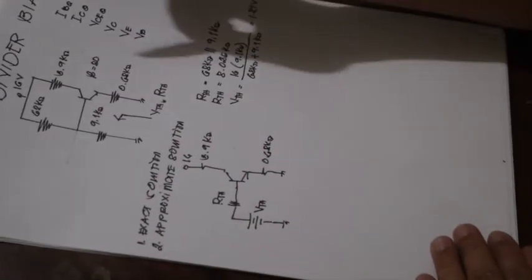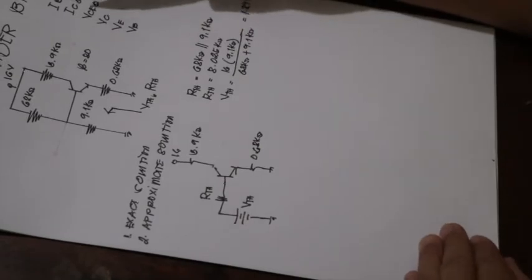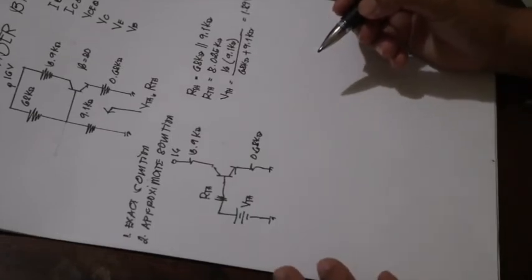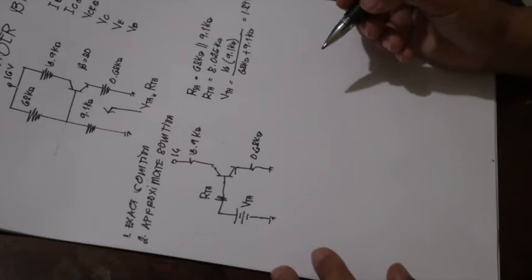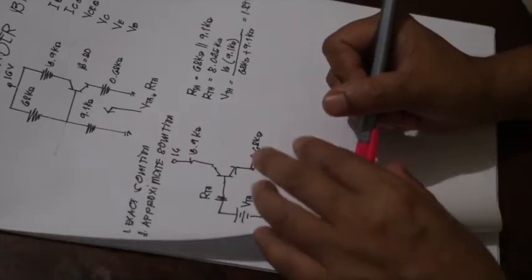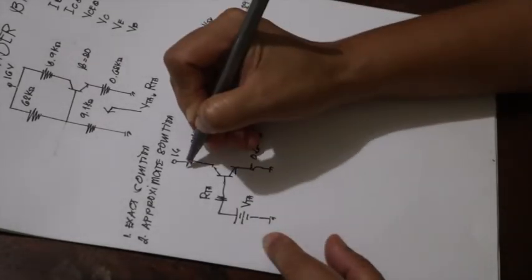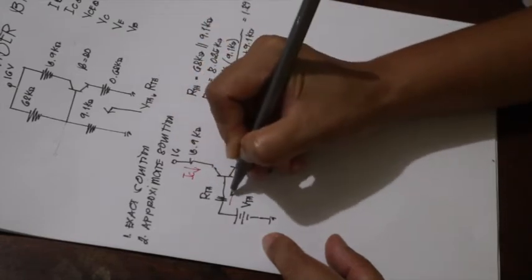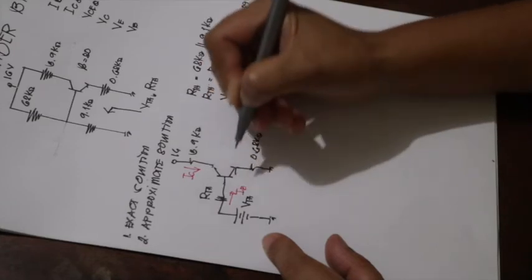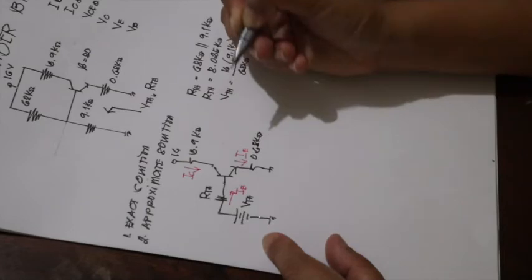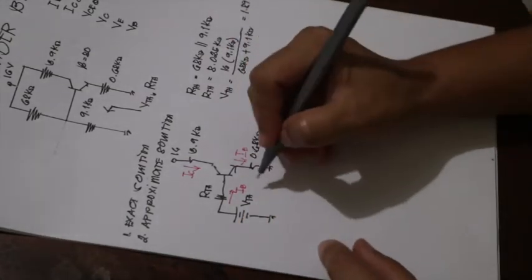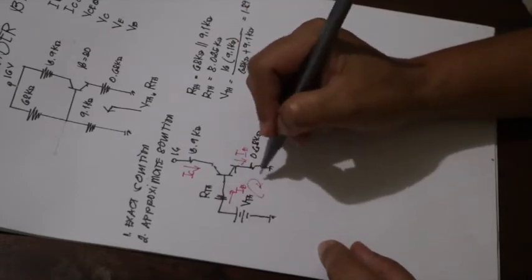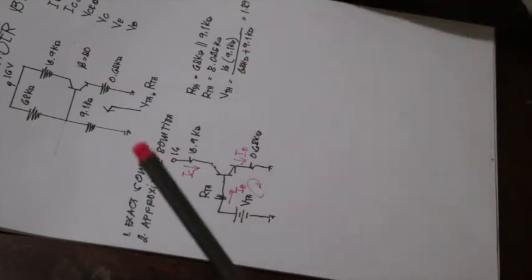After that, how do we solve for the unknowns: IB, IC, VCE, and so on? First, we are going to apply KVL just like what we have done before. To solve for these, let's label the terminal currents: this is IC, this is IB, and this is the direction of the emitter current.